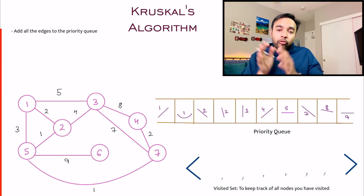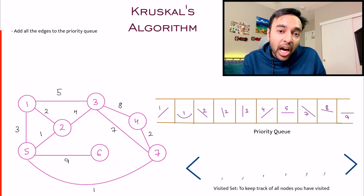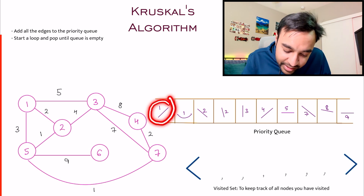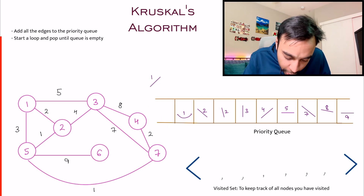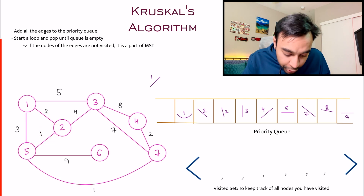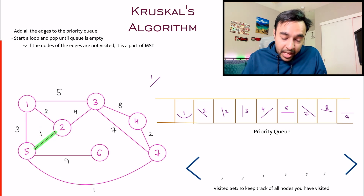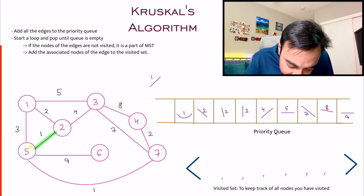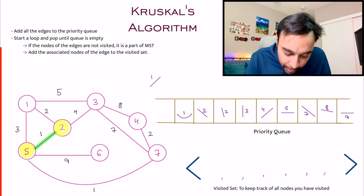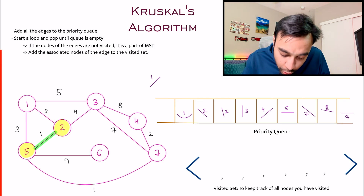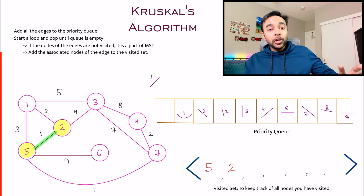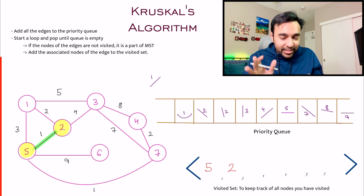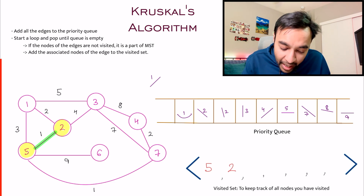In Kruskal's algorithm you start to pop from your queue. The first thing you pop is the minimum-weight edge. This edge is now a part of your minimum spanning tree. At the same time, this edge is covering two nodes — node 5 and node 2. So we write down node 5 and node 2 in our set, indicating we have covered these two nodes. This will help us remove all redundancy going forward.